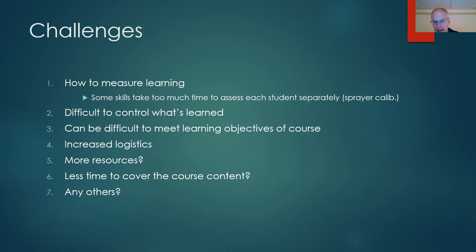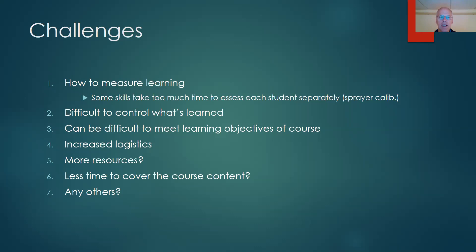Third, it can be difficult to meet learning objectives. If I say I want students to learn how to calibrate a sprayer but never assess it, how do I know they met the learning outcome? There are also more logistics and more resources potentially needed, and less time to cover course content. If I do the sprayer activity, it's going to take a lot of time — I can't get through chapters eight or nine. By attending the Faculty of the Future Conference, a lot of speakers were saying don't worry about getting through all the content. That started to rub off on me a little bit.